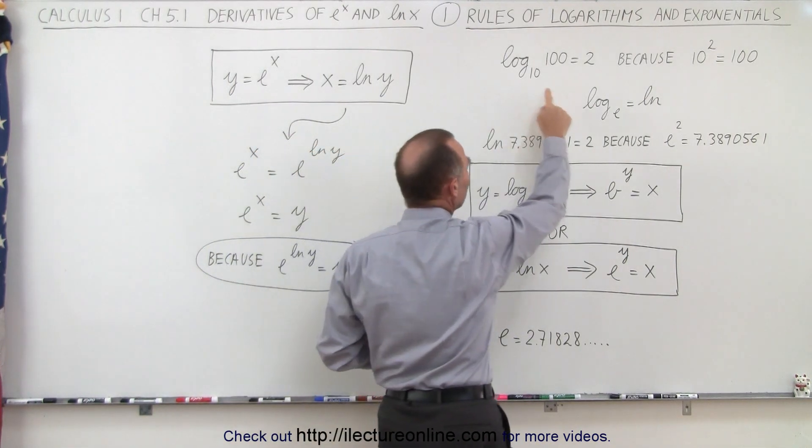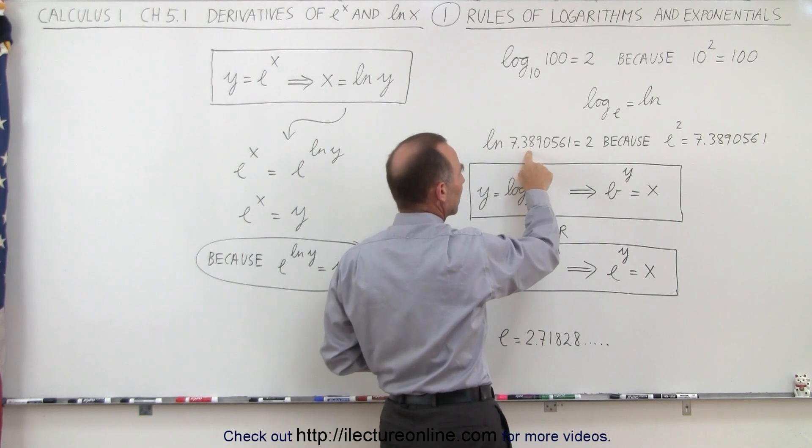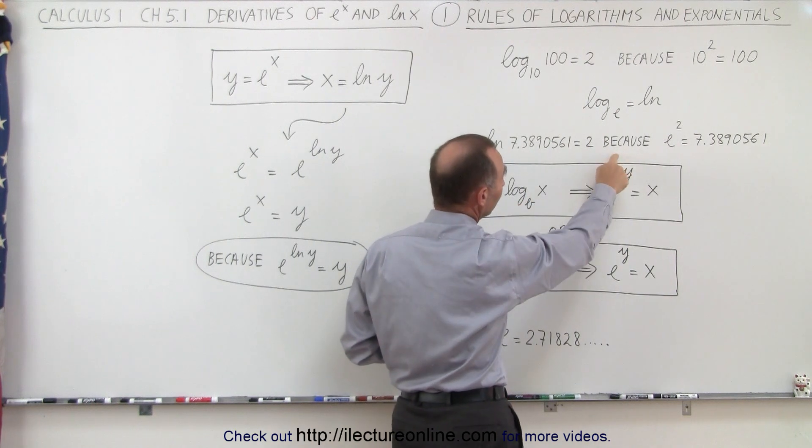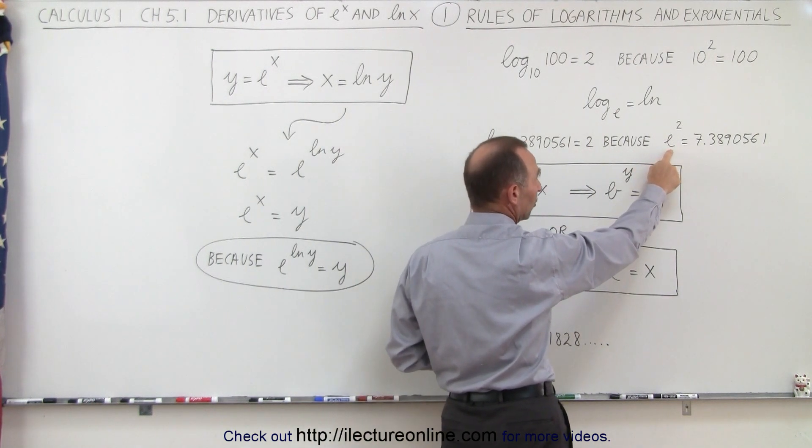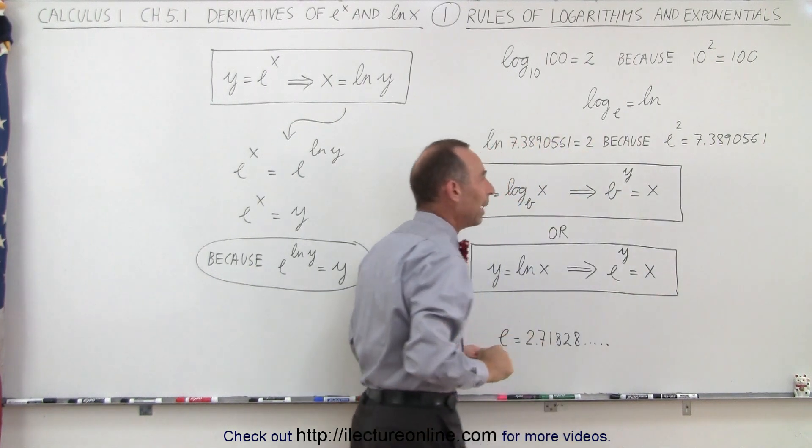We can do the same thing here by using the natural log. The natural log of 7.3890561 is equal to 2 because we take the base, which is the natural number e, raised to the second power, and we get that original number back.